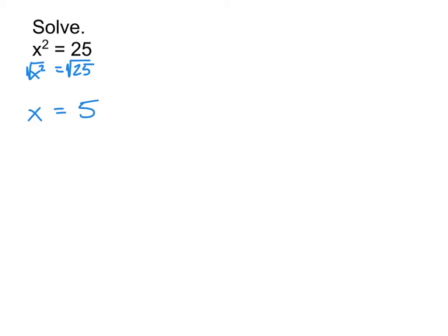5 is not the only number you can square to get 25. What other number squared would equal 25? What about negative 5? Negative 5 squared also equals 25, because negative 5 times negative 5 — a negative times a negative — is a positive. So how do we account for that? We insert the plus or minus symbol: a plus over a minus. It means both the positive and negative versions of that number. Writing x equals 5, negative 5 is the exact same thing as writing x equals plus or minus 5.